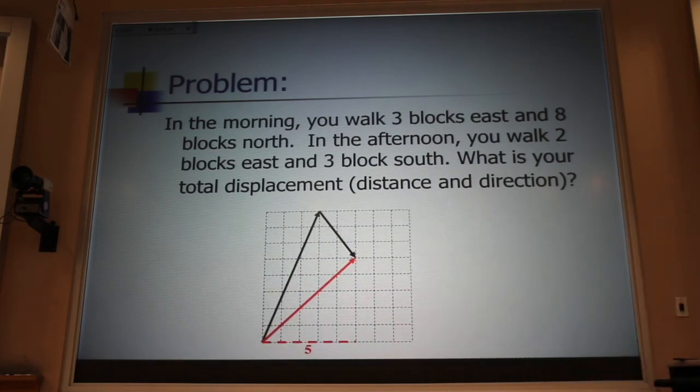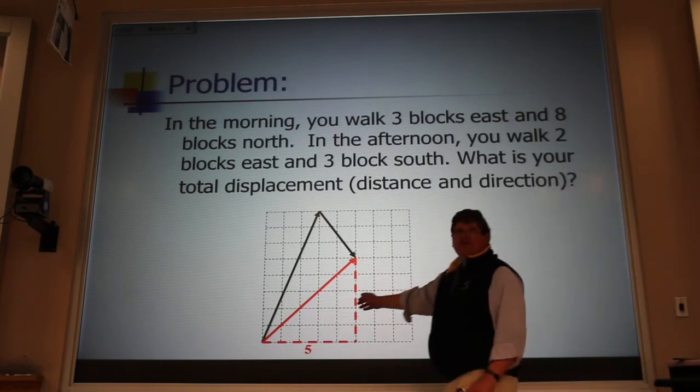Its x part is five to the east. Its y part is five to the north. That's the triangle, the red triangle, that you want to use.